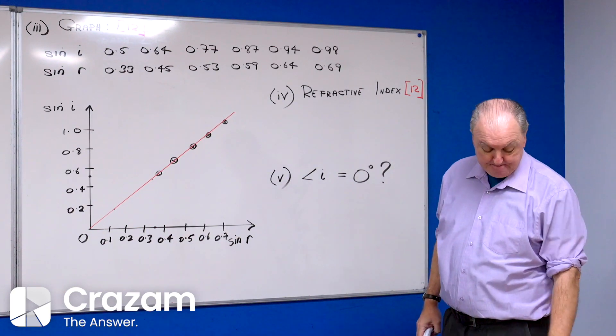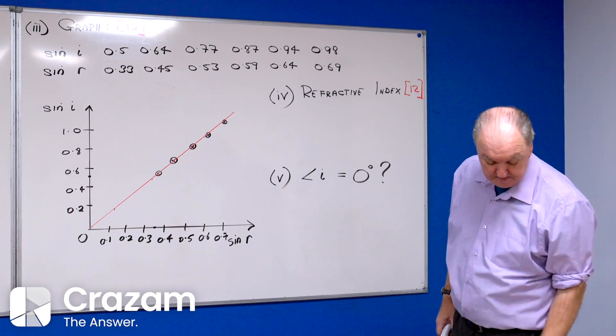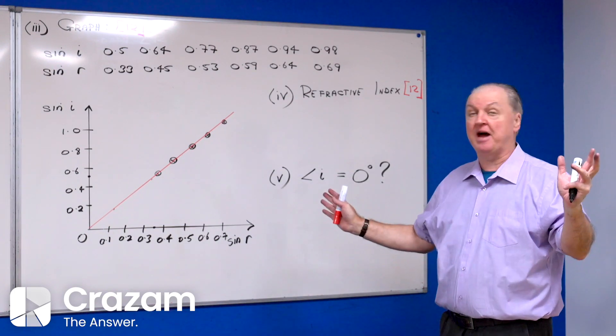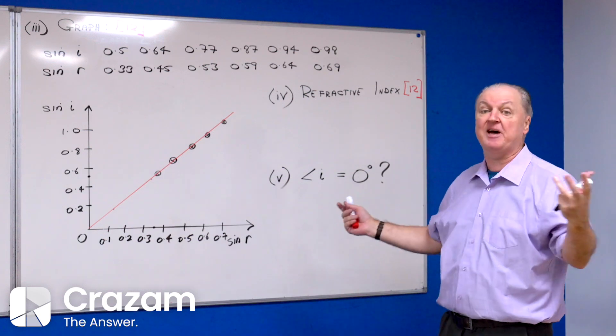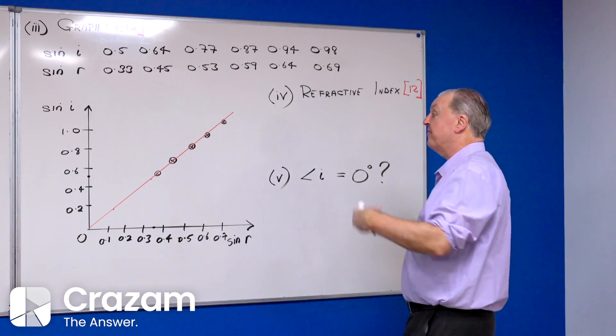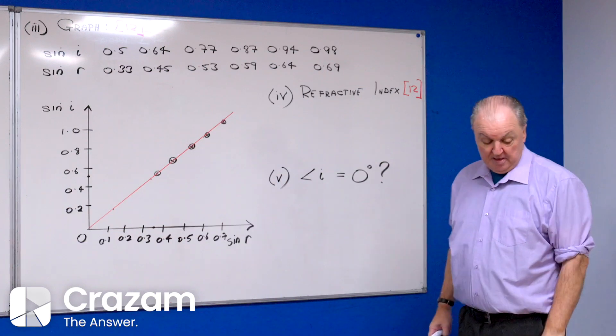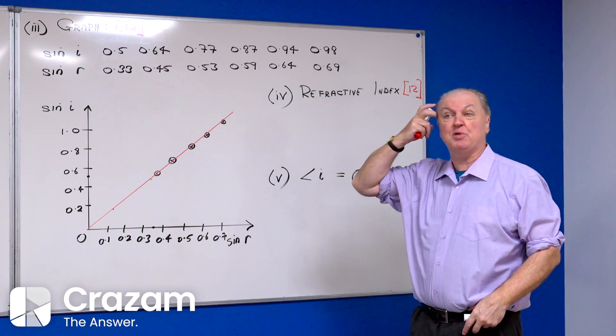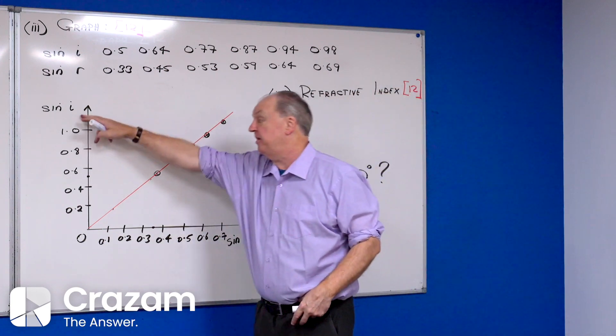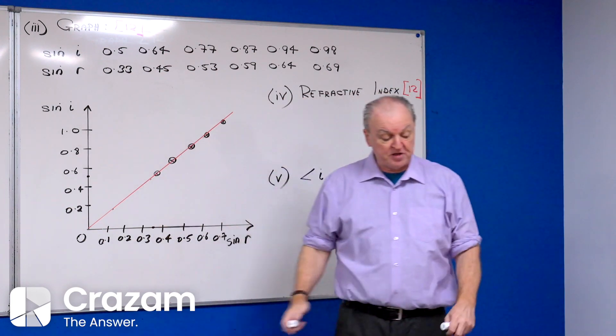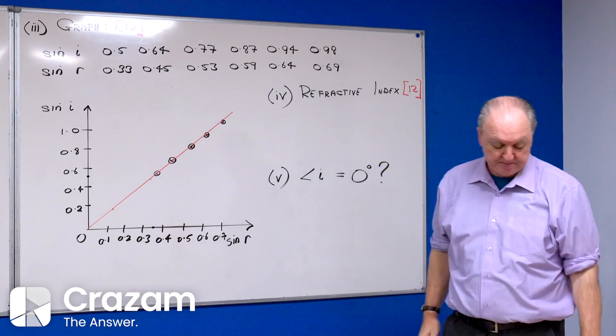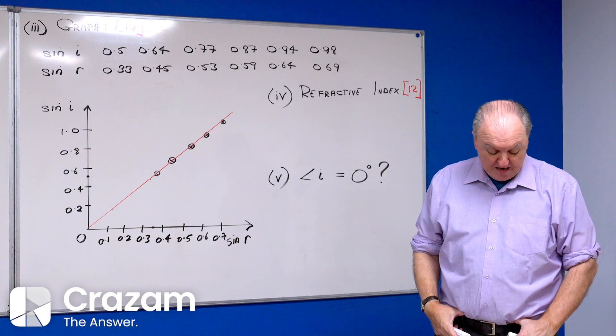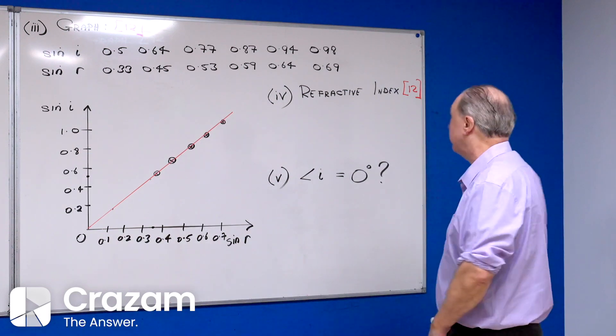How does my graph verify Snell's law? You say straight line graph going through the origin, and therefore sine i is directly proportional to sine r. After I draw my graph, by the way, there's 12 marks for the graph. They're asking in part 4 to use your graph to calculate the refractive index of glass.